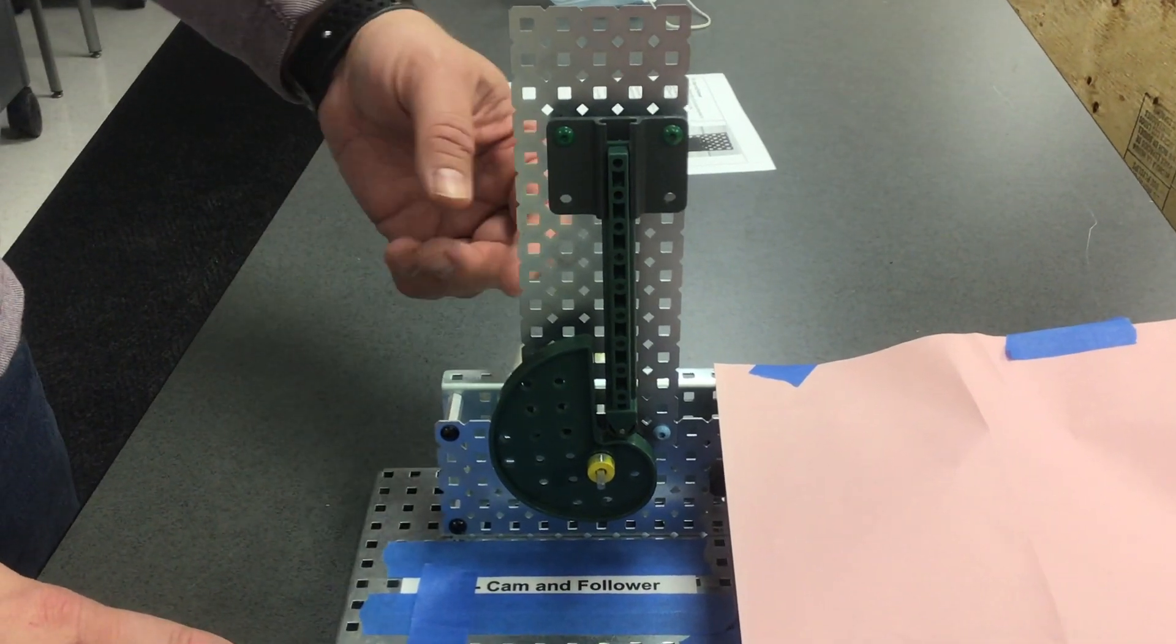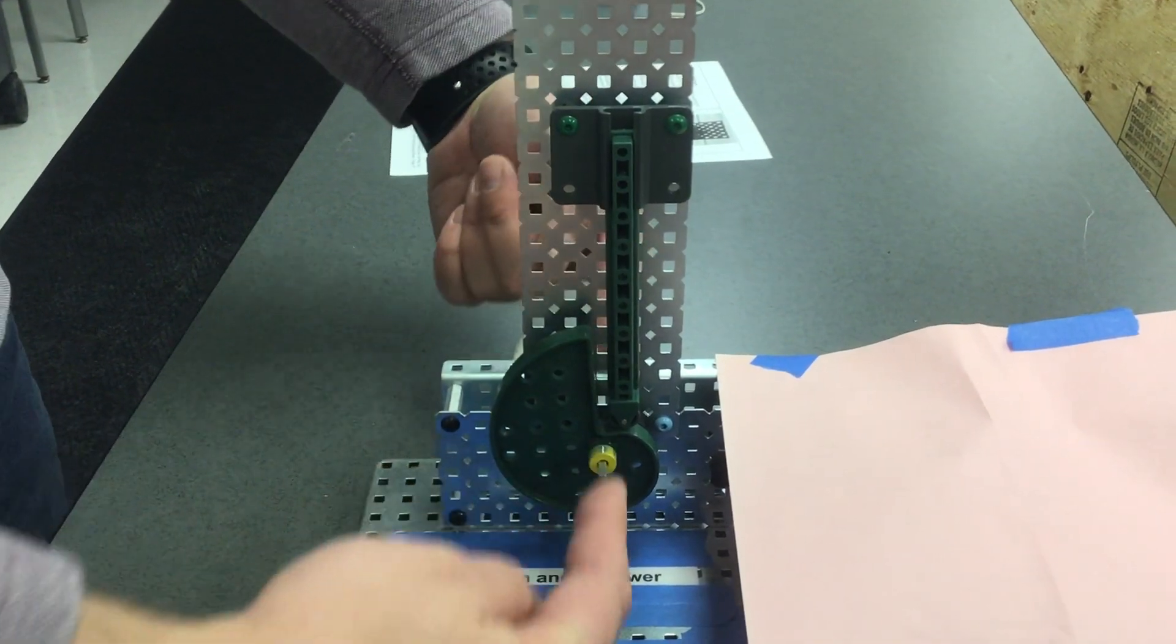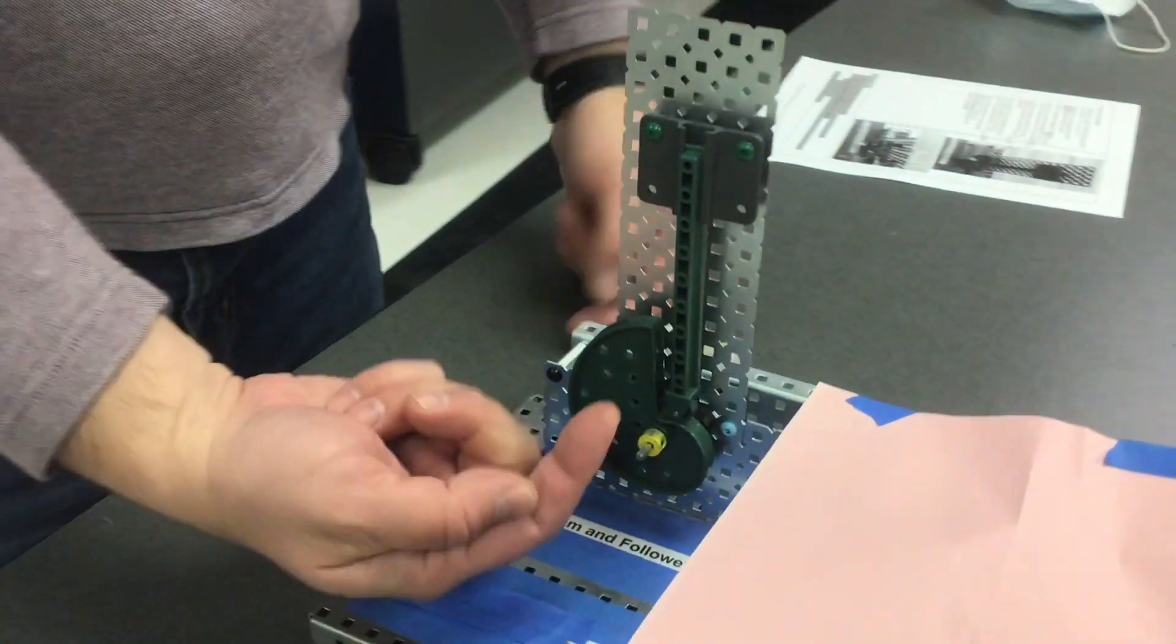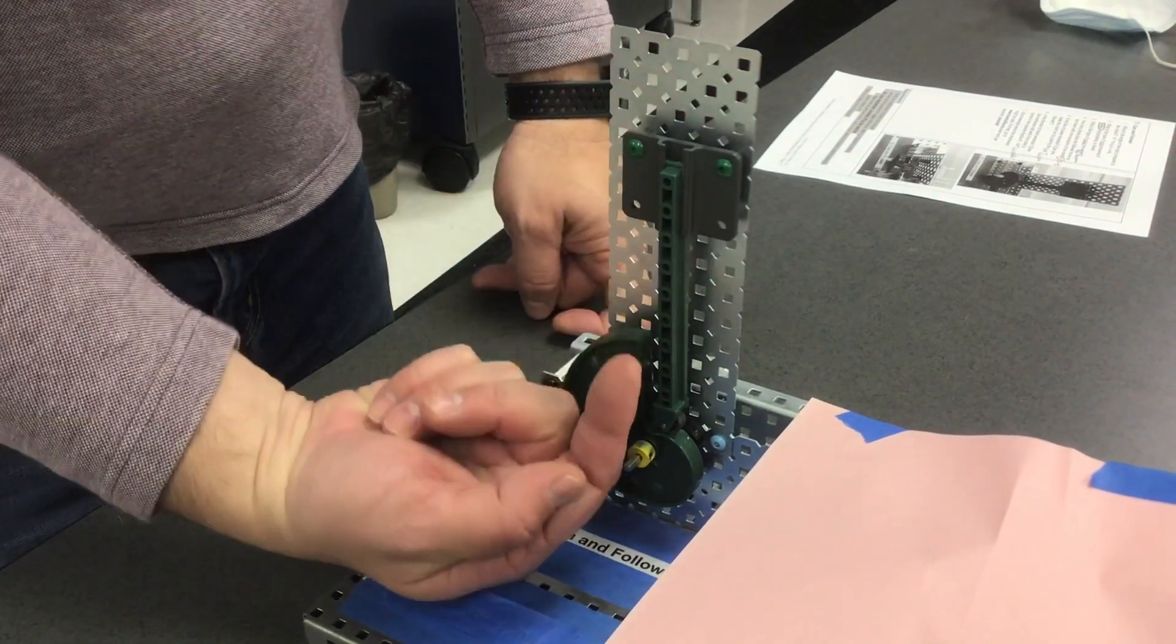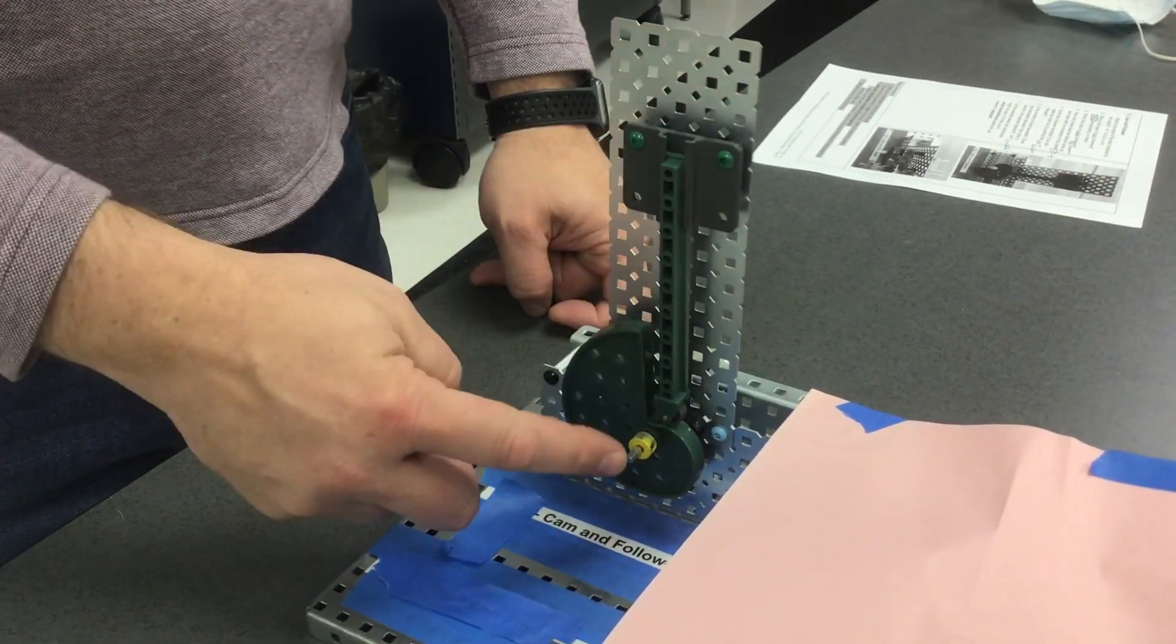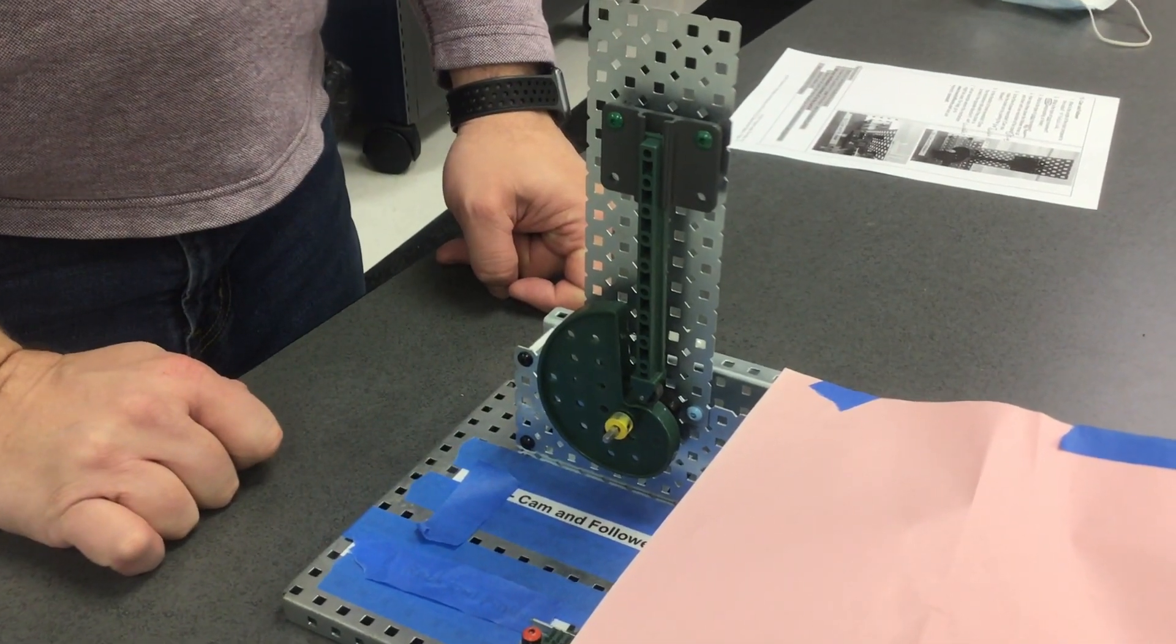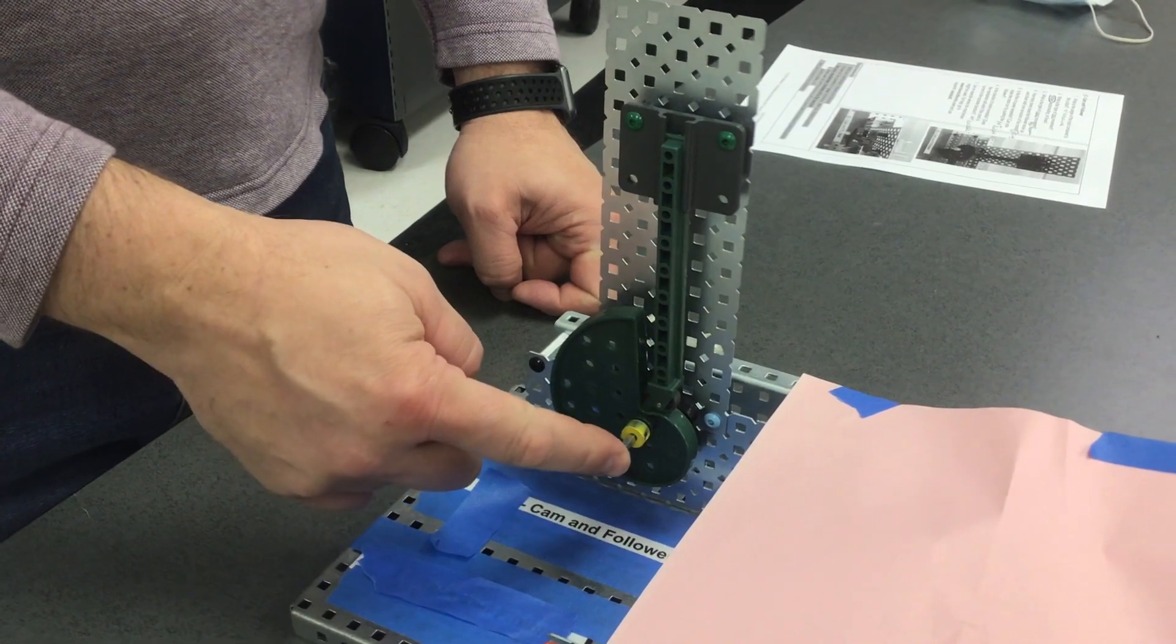Let's first talk about the angle of the axle. This axle is going horizontally and transferring to vertical at 90 degrees. This is perpendicular at 90 degrees, so your angle of input to output is 90 degrees perpendicular.